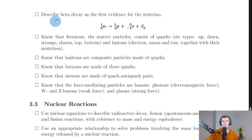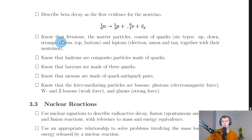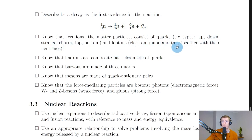You should be able to describe beta decay as the first evidence for the neutrino. The beta decay reaction shows a neutron converting into a proton plus an electron plus an electron antineutrino. It helps to know the story of how neutrinos were discovered. You also need to know that fermions, the matter particles, consist of quarks and leptons. There are six types of quarks: up, down, strange, charm, top, and bottom. And there are six leptons: the electron, muon, and tau particles, together with their neutrinos — the electron neutrino, muon neutrino, and tau neutrino.